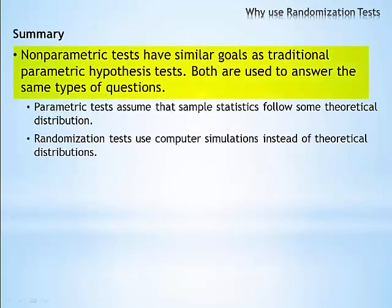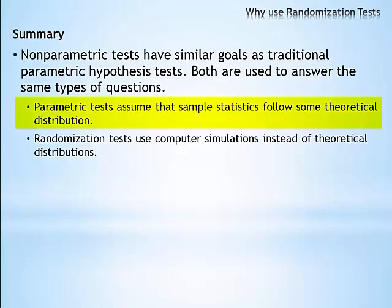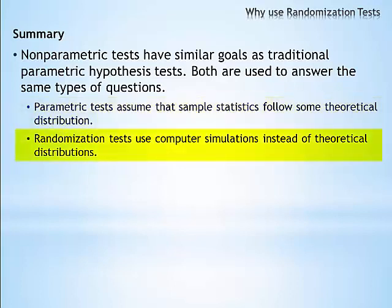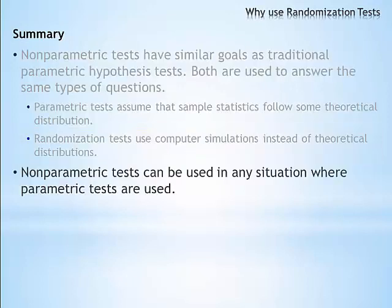In summary, nonparametric tests and parametric tests have similar goals. As long as the assumptions are met, either test can be used and results will tend to be very similar. In parametric tests, we calculate a test statistic such as a t-test, and then compare that test statistic to a theoretical distribution such as the t-distribution. The corresponding p-value is only accurate if the test statistic actually follows that theoretical distribution. If model assumptions are not met, it is likely the p-value is not valid. Randomization tests do not use theoretical distributions. Instead, computer simulations are used to compare the statistics from your study to results obtained when we repeatedly randomize the data across groups many times. While this video is limited to comparing two groups, nonparametric tests can be used in any situation where parametric tests are used. I hope that you will see how the randomization test has many benefits over the parametric tests you typically saw in your introductory statistics class.